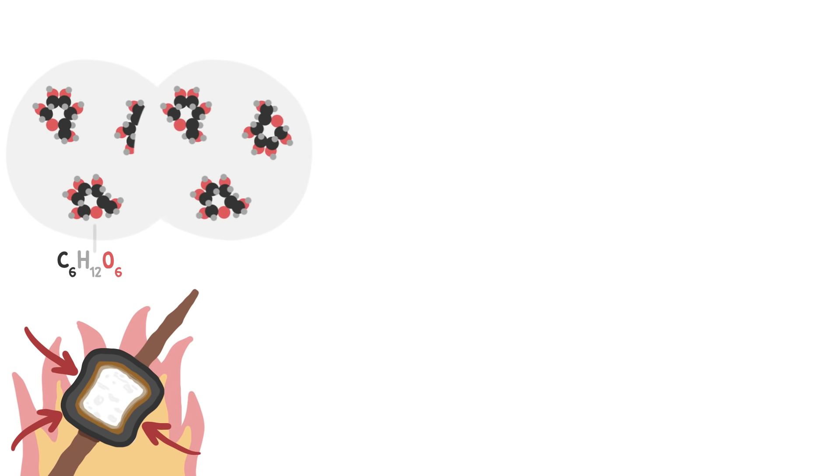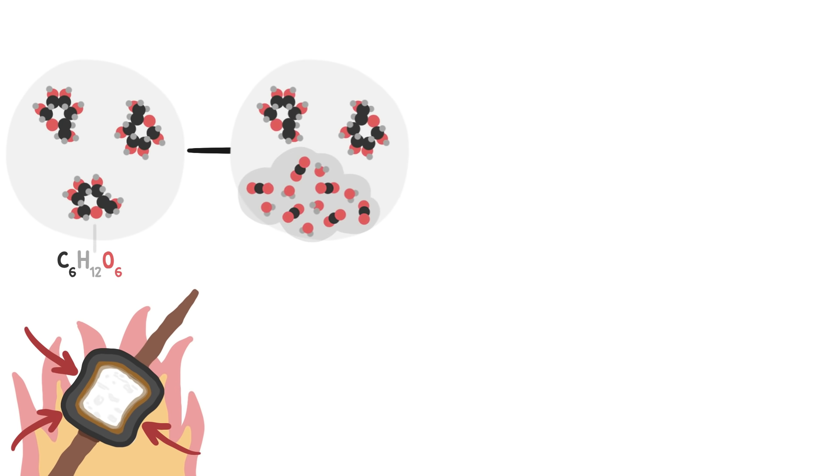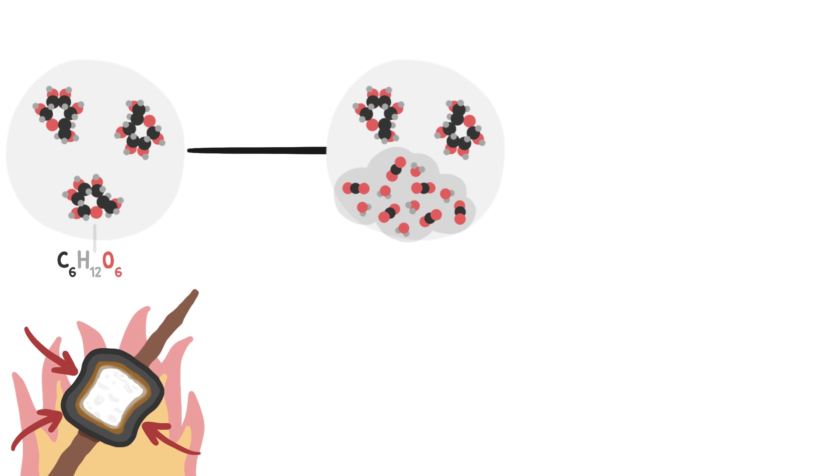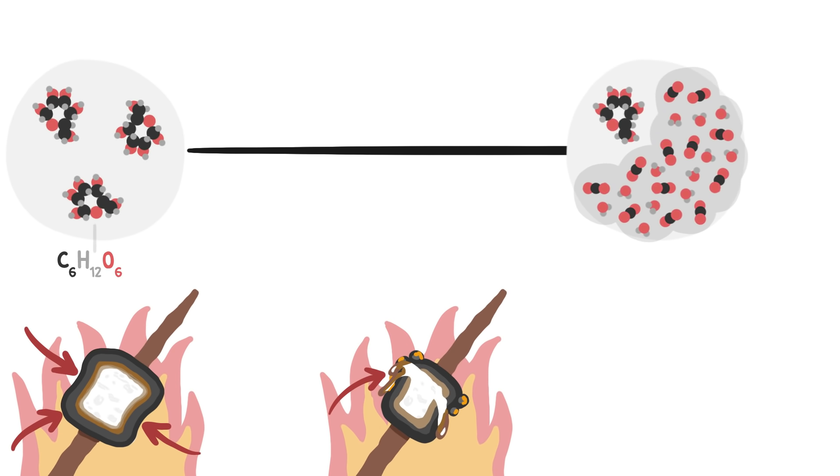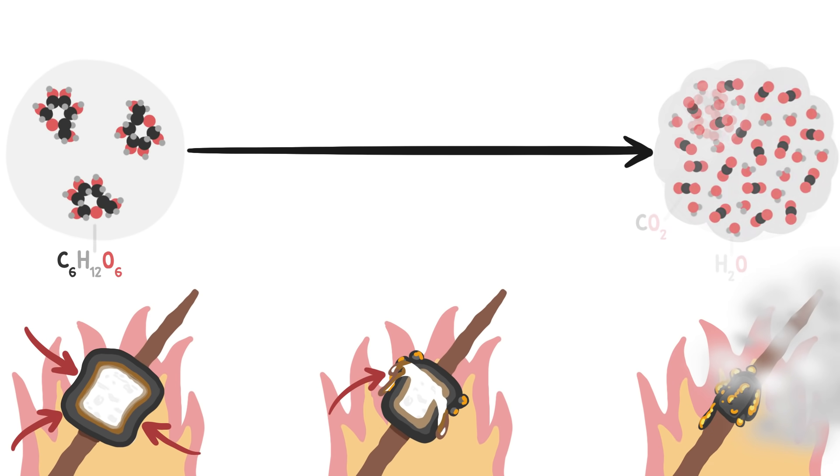Once you add some energy to get things started, only atoms on the marshmallow's surface, where its sugar meets oxygen from the air, will be able to rearrange themselves. As the marshmallow burns, more and more of its sugar will encounter the oxygen and be able to react. But burning the whole sugary shebang, and releasing all its energy, will take an entire minute or so.